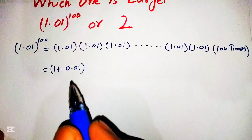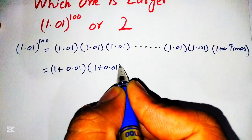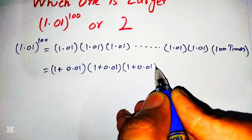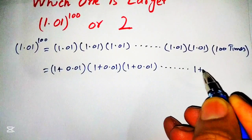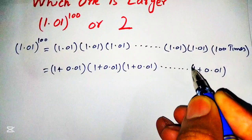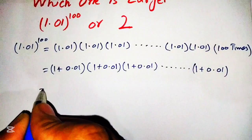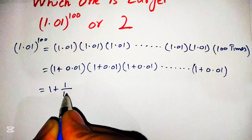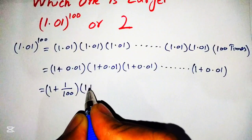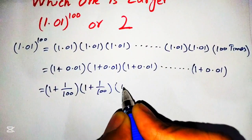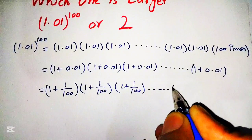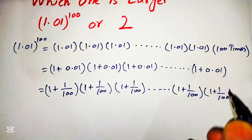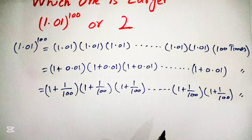Similarly, each factor can be written as (1 + 0.01), and eliminating the decimal, we write 0.01 as 1/100. So the entire expression becomes (1 + 1/100) × (1 + 1/100) × ... × (1 + 1/100), multiplied 100 times.